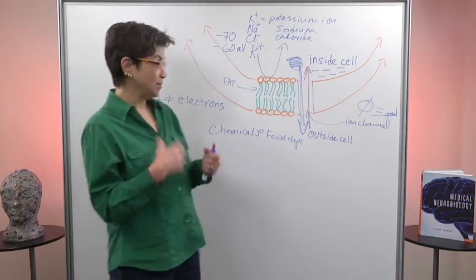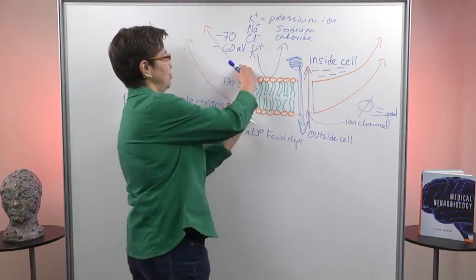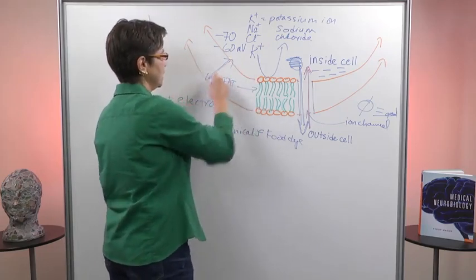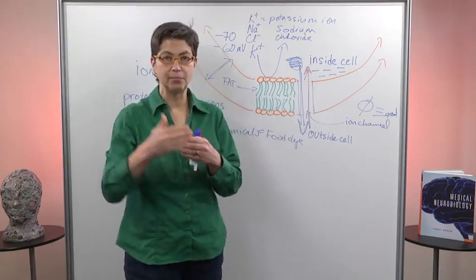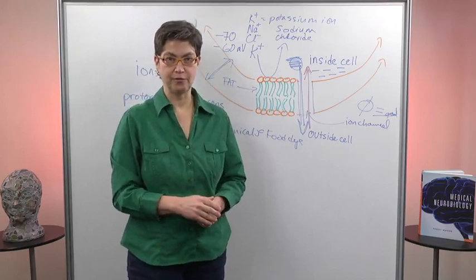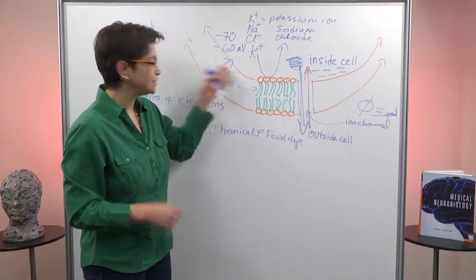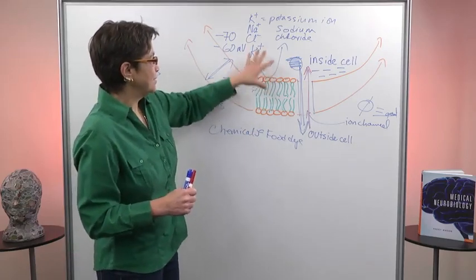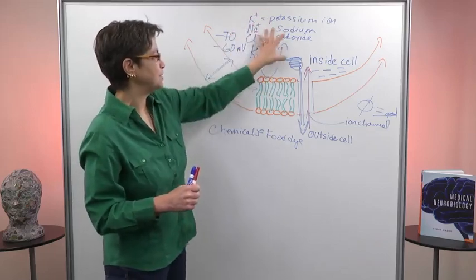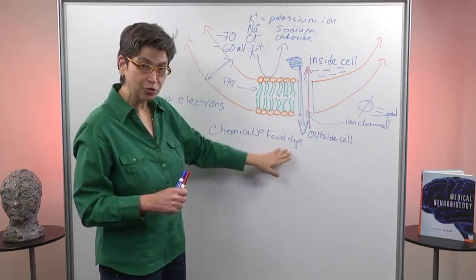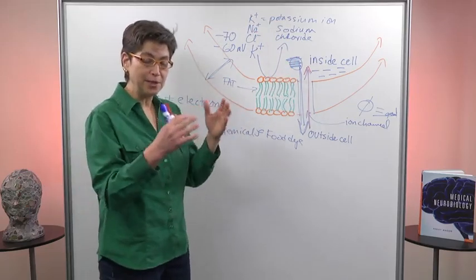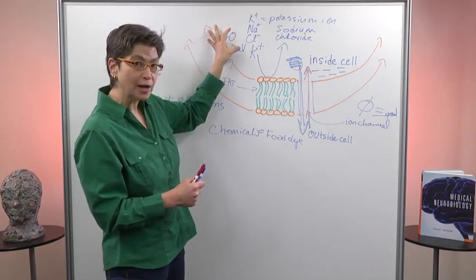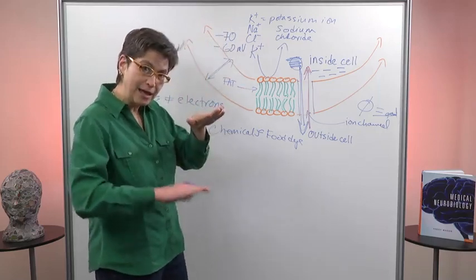...but you're talking about keeping it across a very small distance, and so this is essentially like keeping a lightning bolt an inch away from yourself. This is a very powerful structure. So the bottom line is that at rest, what we have is a distribution of these different ions based on both their electrical and their chemical forces, and the result is that this neuron is going to sit always at a negative potential until something happens, and that's what we're going to talk about in the next segment.